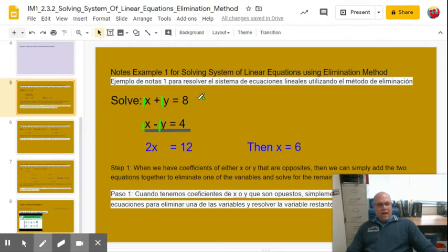So look what happens now when we add these two equations. When we have this scenario, we just add the two equations. Look what happens. 1x plus 1x, 2x. 1y plus negative 1y, no y. 8 plus 4 is 12.